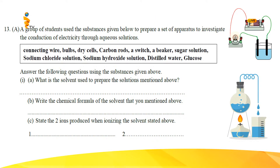A group of students use the substances given below to prepare a set of apparatus to investigate the conduction of electricity through a solution. The list of solutions and materials given here: connecting wires, bulbs, dry cells, carbon rods, a switch, a beaker, sugar solution, sodium chloride solution, sodium hydroxide solution, distilled water, and glucose solution. Note: there is a simple printing mistake in your book — this should be glucose solution, not just 'glucose'. Please correct it as 'glucose solution'.